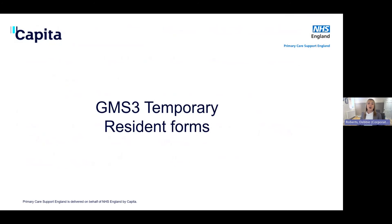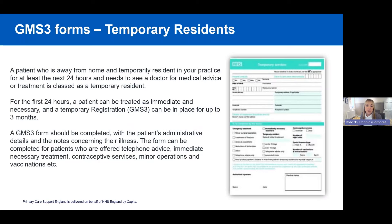We're now going to touch on GMS3 forms for temporary residents. The GMS3 form is used for a patient that needs care at the practice but is not actually registered with you. The form should be completed with all the patient's details, including details of the illness. It can be used for telephone advice, immediate necessary treatment, contraceptive services, and more.